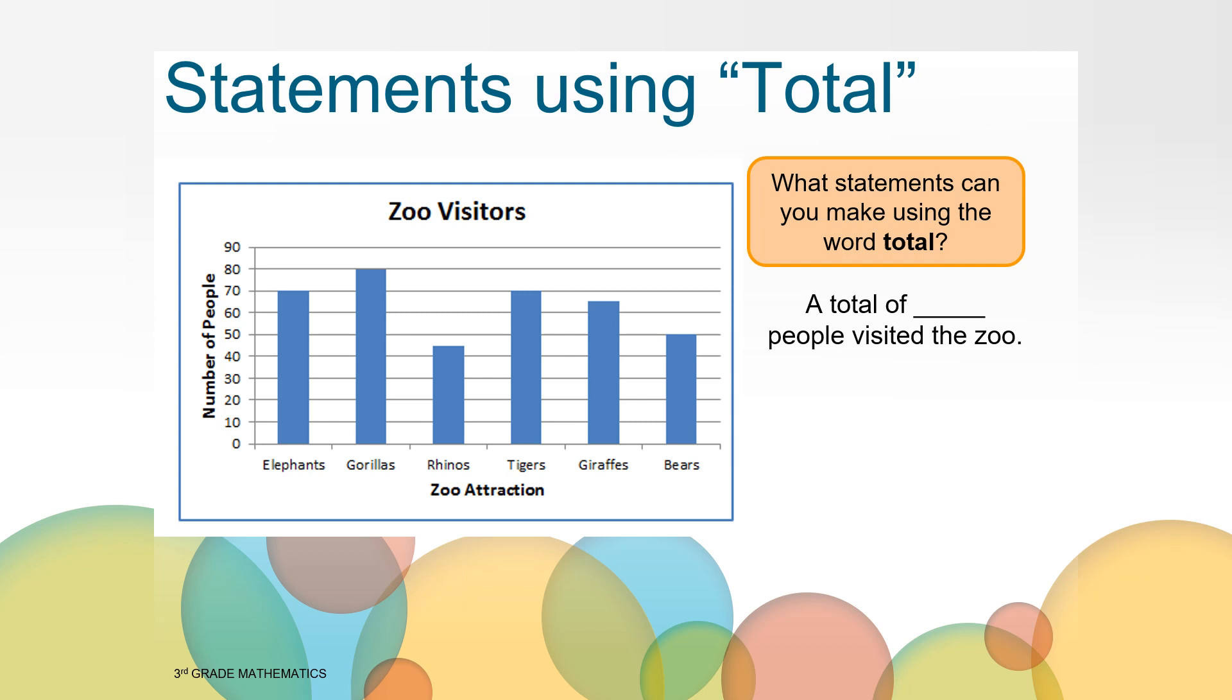How did you solve it? Did you do anything to make it easier to solve? I needed to figure out the number of visitors for each animal first. Did you do this too? Or did you solve it differently? Next, I added them together, but I saw some friendly numbers that would make adding easier. I saw that 70 elephants plus 80 gorillas equals 150 animal visitors. And 150 visitors plus 50 bear visitors equals 200 visitors.